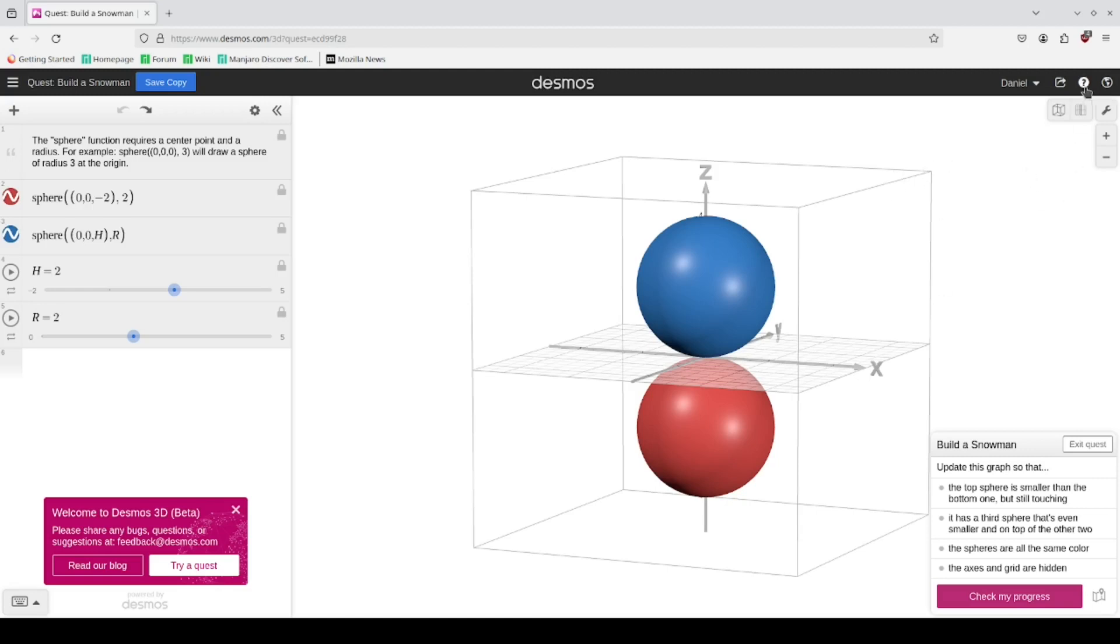The other option if you don't see this is you go to the top right. There's a help icon you would click on this, and Build a Snowman is not far from the top. So you click on this.